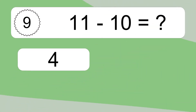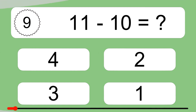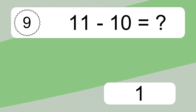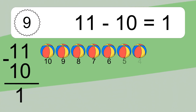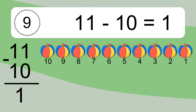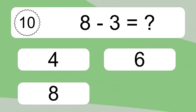11 minus 10 equals what? 11 minus 10 equals 1. Let's count it: 10, 9, 8, 7, 6, 5, 4, 3, 2, 1.